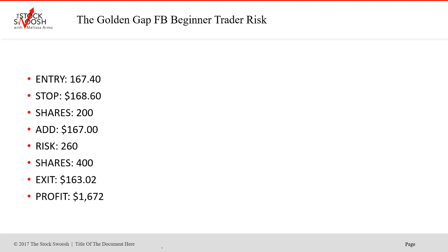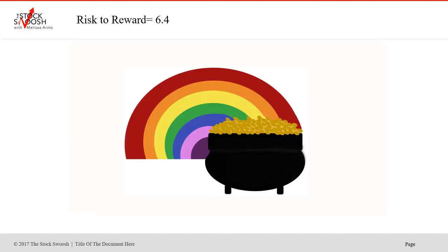What if you did not want to take 4,000 shares of Facebook? You still could have done the exact same trade with a beginner account. You could have taken initially 200 shares, then added to have 400. The entries and the stop are the same. Your risk would have been $260, and with 400 shares you could have made $1,672 — a great trade risking only $260.